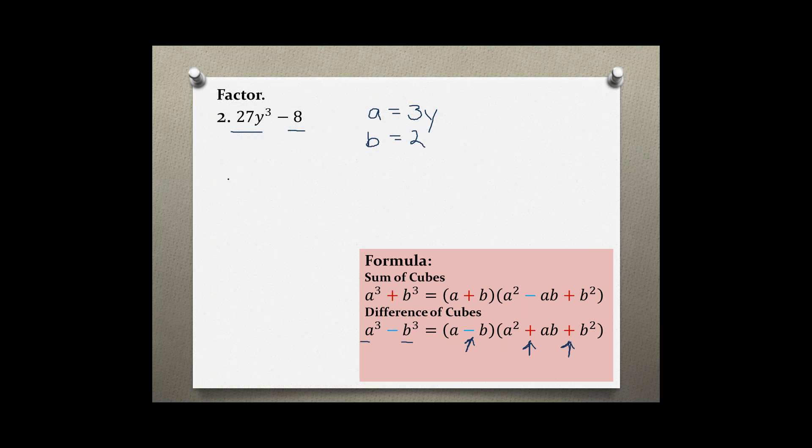Filling this into our formula, we start with a³, so (3y)³ minus our b³, which is 2³. And all that equals a, which is 3y, minus b, so 2.